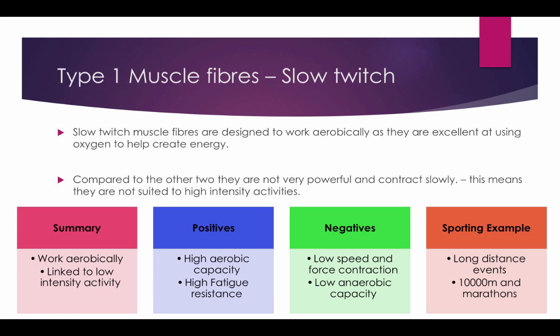Type 1 Slow Twitch Muscle Fibres are designed to work aerobically, with oxygen, as they are excellent at using oxygen to help create energy. Compared to the other two types, they are not as powerful and contract a lot slower, meaning they are not suitable for high intensity activities such as 100m sprinting. They are linked to low intensity activity. The positives are they have a high aerobic capacity and high fatigue resistance. The negatives are they have a low speed and force of contraction and a low anaerobic capacity. Sporting examples include long distance events such as 10,000m runners and marathon runners.